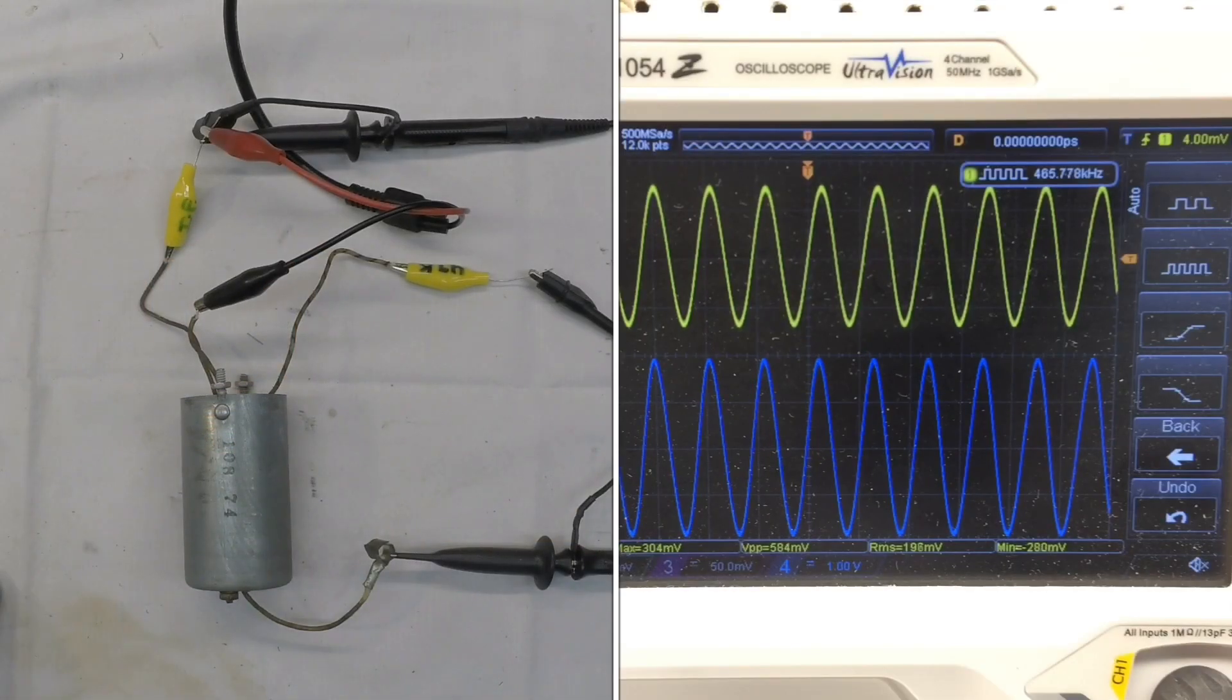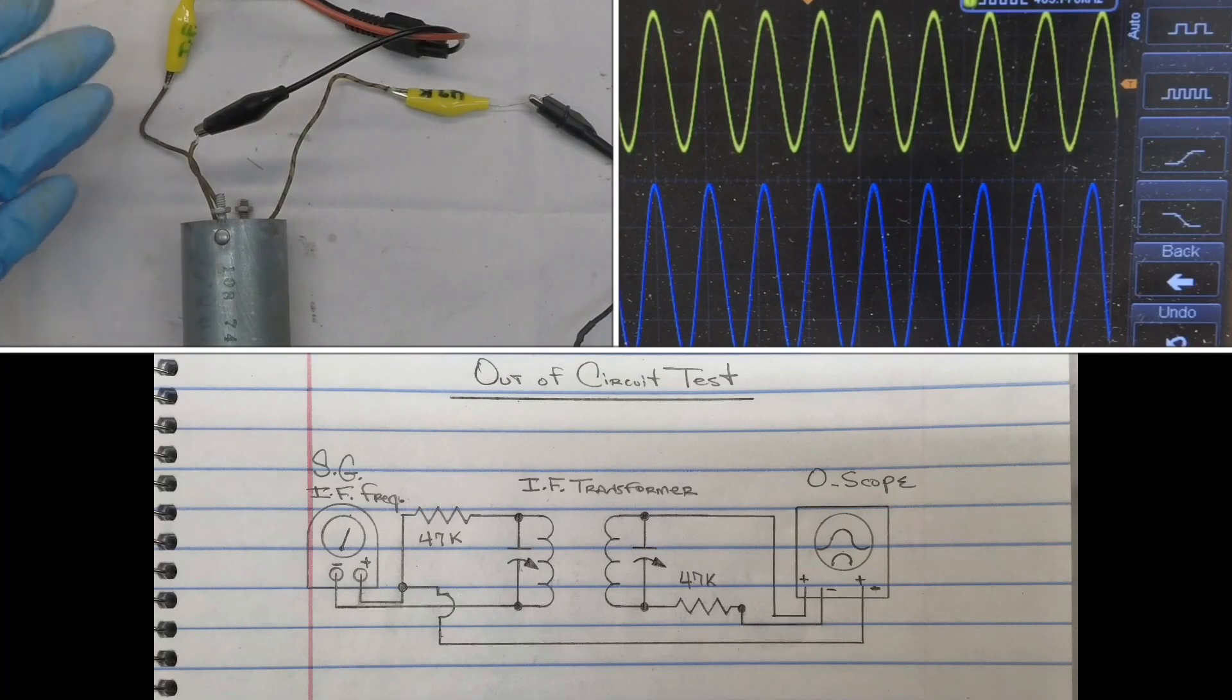Hi folks, you can see I've got the first IF transformer removed from the airline 62316. I'm just doing some basic tests. You can reference the drawing or schematic here, how I've got this hooked up.